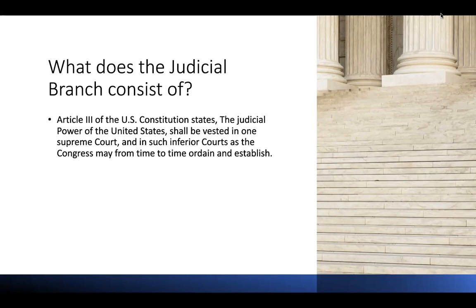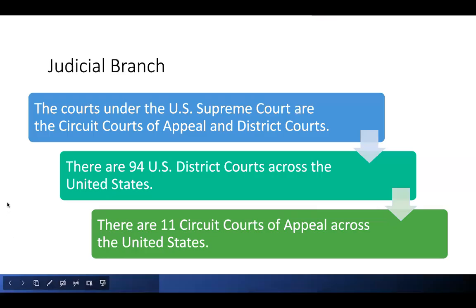This means that the Constitution provides for the creation of the Supreme Court, and then Congress is the one who establishes our lower courts — our circuit courts and our trial courts. The courts under the U.S. Supreme Court are the Circuit Courts of Appeal and the District Courts. Currently, there are 94 U.S. District Courts across the United States. These district courts are your federal trial courts.